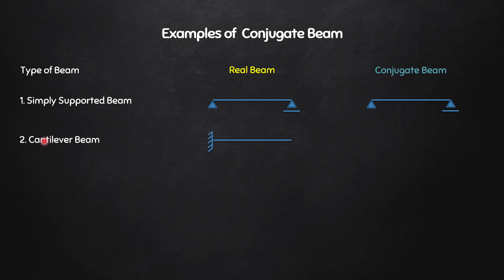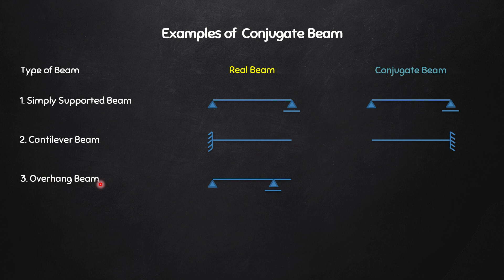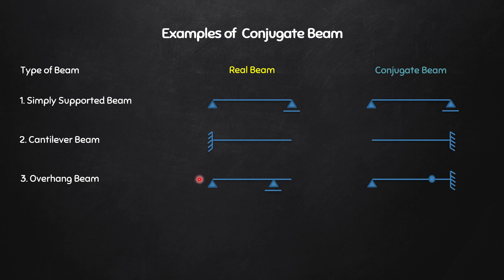For a cantilever beam — fixed support on one side and free end on the other — the fixed end becomes a free end in the conjugate beam and the free end becomes a fixed support. So the conjugate beam of a cantilever is also a cantilever but with the supports swapped. For an overhang beam with an end hinge support, an intermediate roller support, and a free end: the end hinge remains as end hinge, the intermediate roller support becomes an internal hinge, and the free end becomes a fixed end.